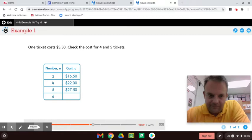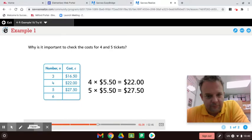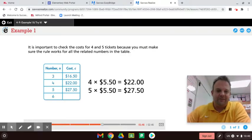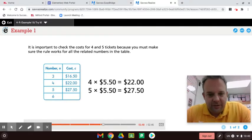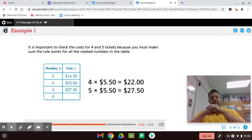Check the cost for four and five tickets. Why is it important to check the costs for four and five tickets? We've got to check the cost because it could just be a coincidence. It is important to check the costs for four and five tickets because you must make sure the rule works for all the related numbers in the table. It's got to work for all of them.